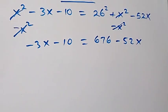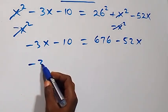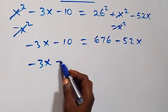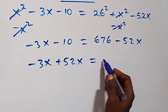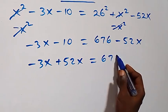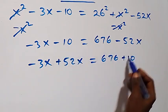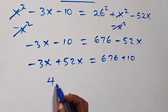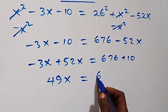Collecting like terms: minus 3x minus 10 equals 676 minus 52x. Moving minus 52x to the left becomes plus 52x, and minus 10 to the right becomes plus 10. So minus 3x plus 52x equals 49x, and 676 plus 10 equals 686. Therefore 49x equals 686.